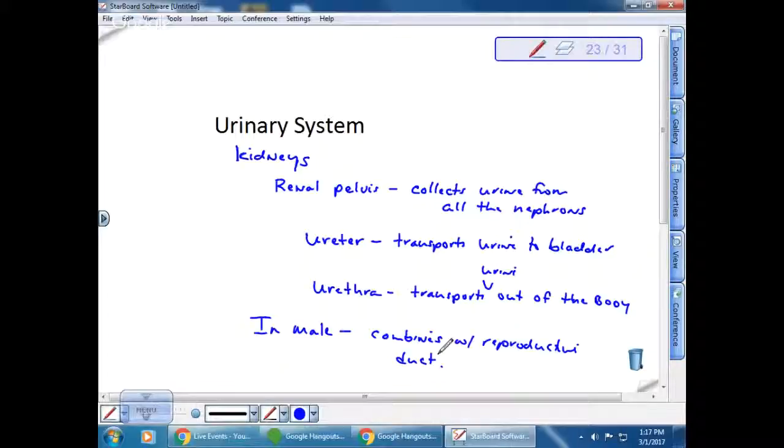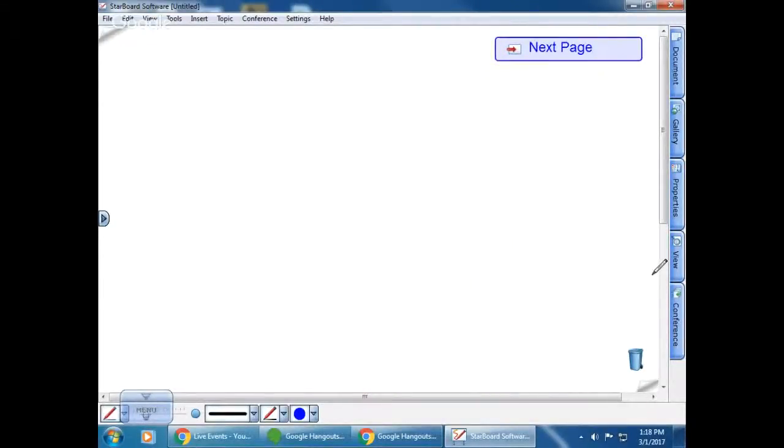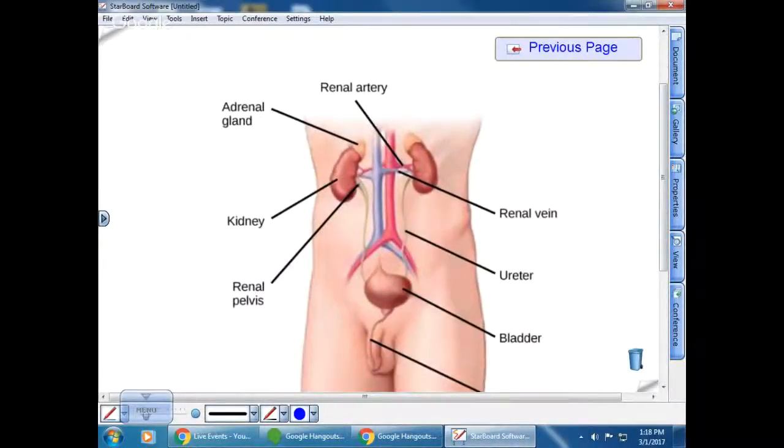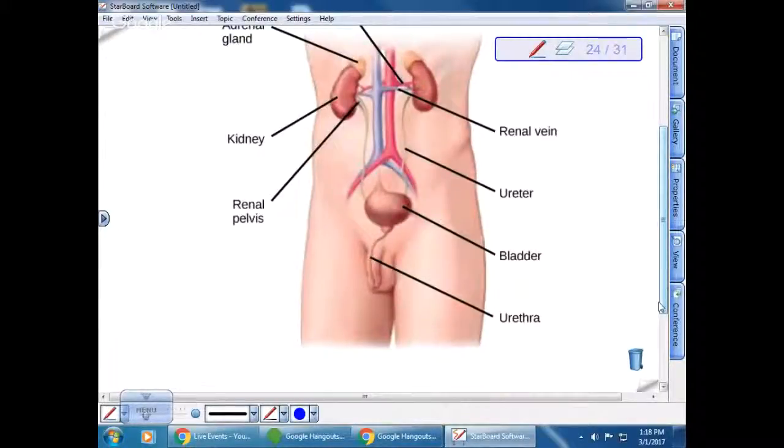In your book there is a diagram of the urinary system. This is the ureter, comes down, it actually enters here. This is the bladder, and then this is the male that comes out. This is actually showing the prostate gland. It comes out through the penis to the body via the urethra. We'll talk more about the prostate gland and bladder when we talk about the reproductive system.